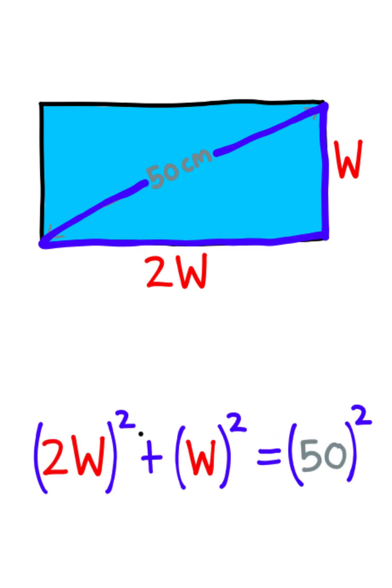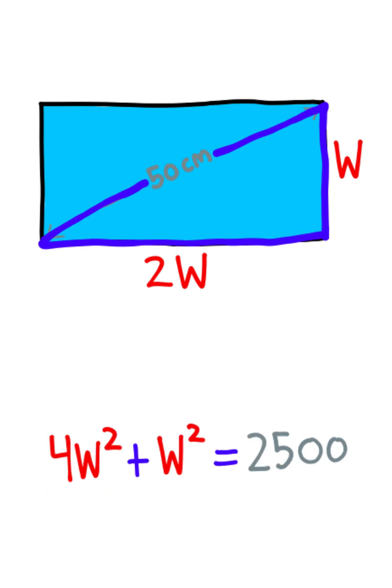I should get that 2w squared plus w squared equals 50 squared. So I'll go ahead and square each of these terms, which will give me this equation right here.